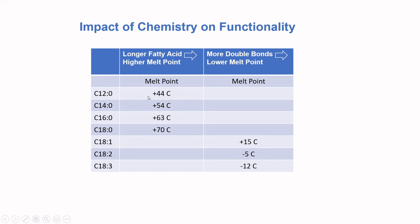Looking at melting points by fatty acid: longer fatty acids have higher melting points — C12 at 44°C, C14 at 54°C, C16 at 63°C, C18 at 70°C. The moment we start adding double bonds: 18:0 is 70°C, 18:1 is 15°C, 18:2 is -5°C, 18:3 is -12°C. So more double bonds lowers the melting point, and longer fatty acids raise the melting point.